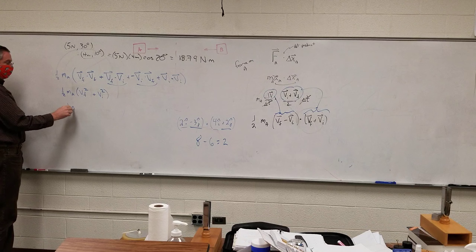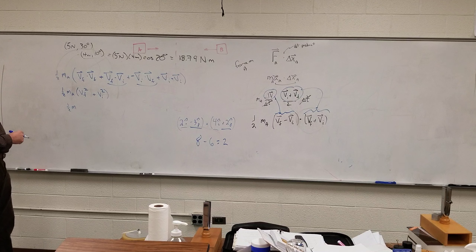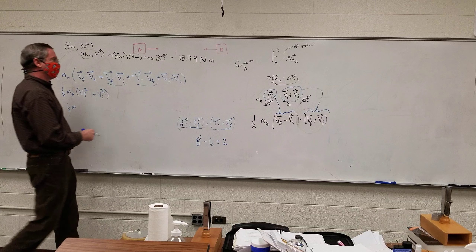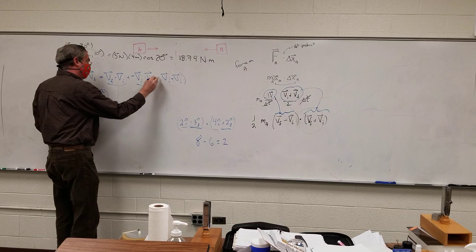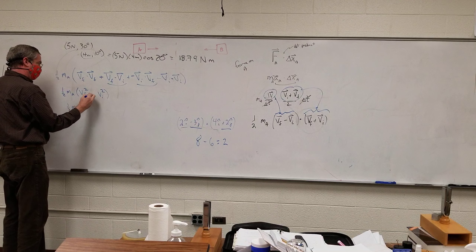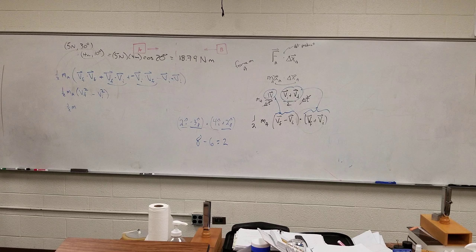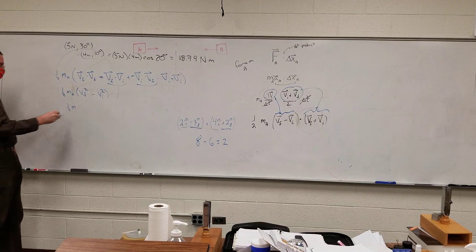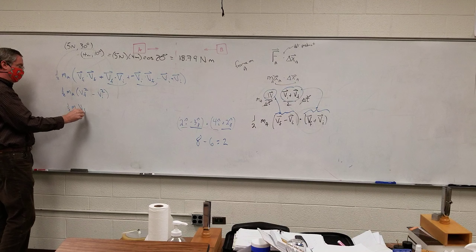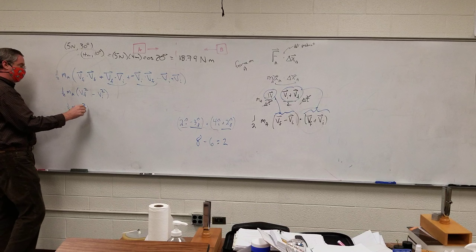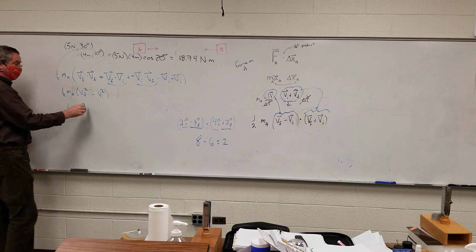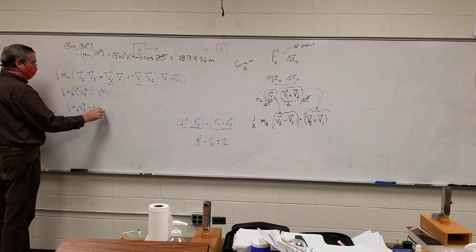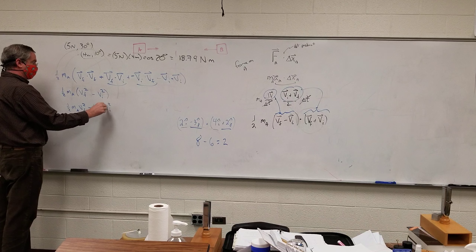Now let's simplify. v_f dot v_f equals v_f squared, giving one-half mass of A times v_f squared. Then v_f dot v_i minus v_i dot v_f — they cancel out. And at the end, v_i dot v_i equals v_i squared. But I lost a negative — that should be minus at the end. So I have one-half M_A times v-final squared minus one-half M_A times v-initial squared.